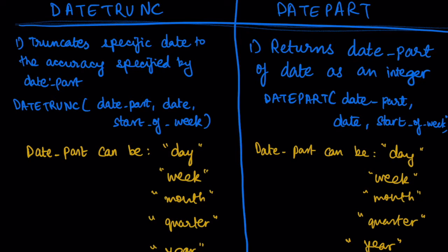Let us look at how Tableau defines both of these functions on the Tableau website. DATE_TRUNC is defined as: 'truncates the specific date to the accuracy specified by the date part within the function.' DATE_PART is defined as: 'returns the date part of a date as an integer.'